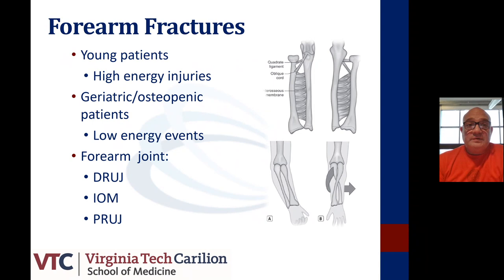Forearm fractures present in a varied way. They will present in the young patient population — usually these are associated with high-energy injuries. We may also see them in the geriatric or osteopenic patients later in life, and these are usually considered low-energy events.